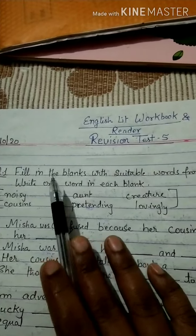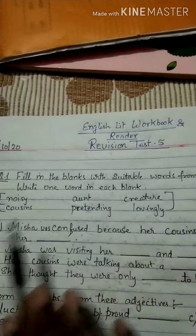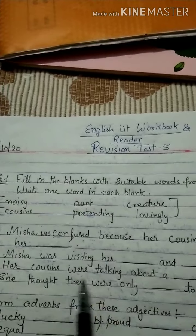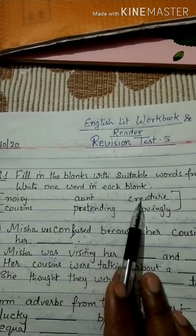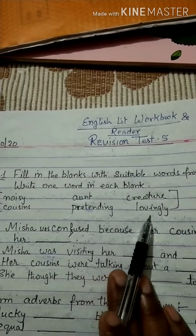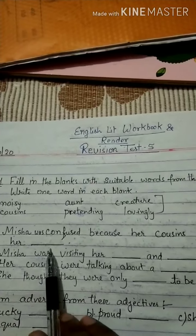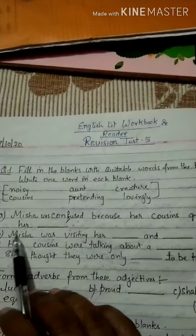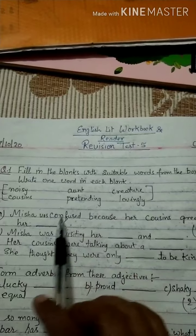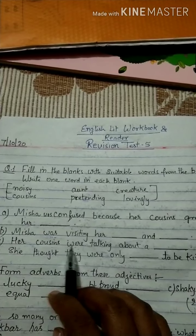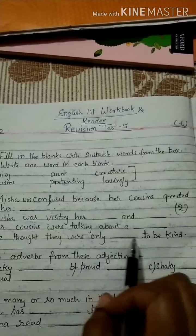Question number 1: Fill in the blanks with suitable words from the box. Write one word in each blank. The words given are: noisy, aren't, creature, cousins, pretending, and lovingly. A. Misha was confused because her cousins greeted her ___. B. Misha was visiting her ___ and ___. C. Her cousins were talking about a ___. D. She thought they were only ___ to be kind.